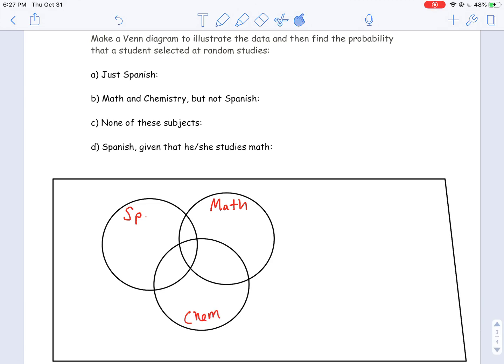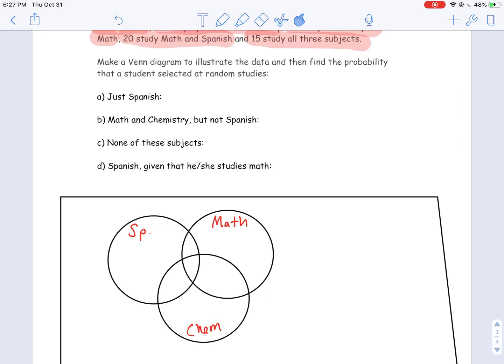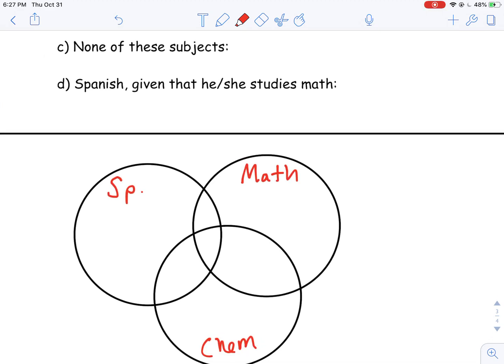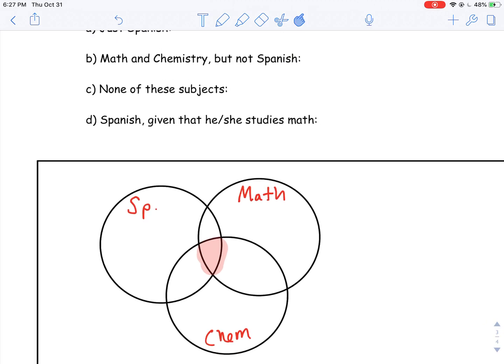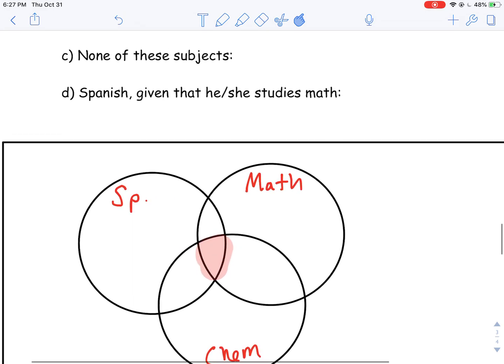I'm going to go with the information they give me. They tell me 15 study all three subjects, so I want to find the spot within this Venn diagram where all three of these circles intersect. If you look at this spot right here, I have Spanish, Math, and Chemistry all intersecting here. So that's going to represent people who took all three. So I'm going to put my 15 right here.